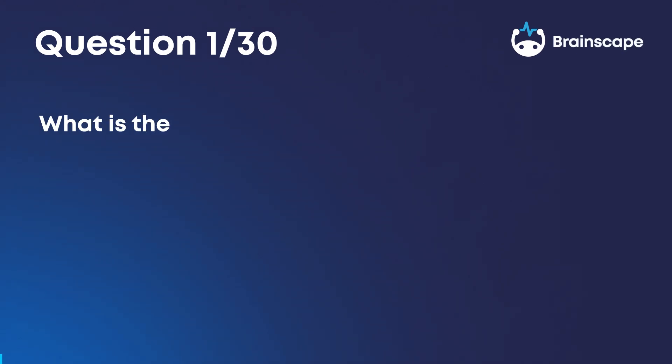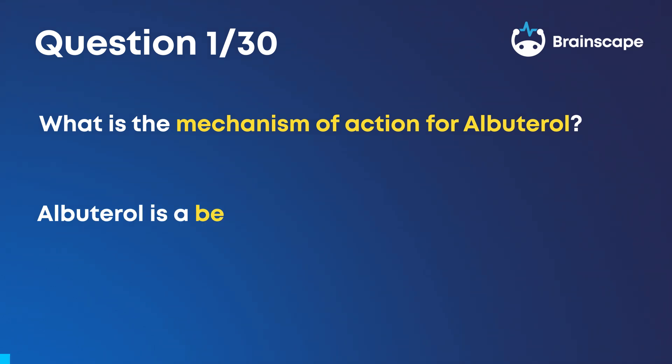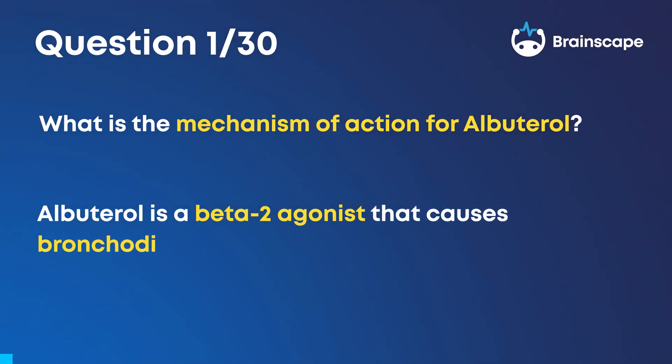Question 1. What is the mechanism of action for albuterol? Albuterol is a beta-2 agonist that causes bronchodilation.